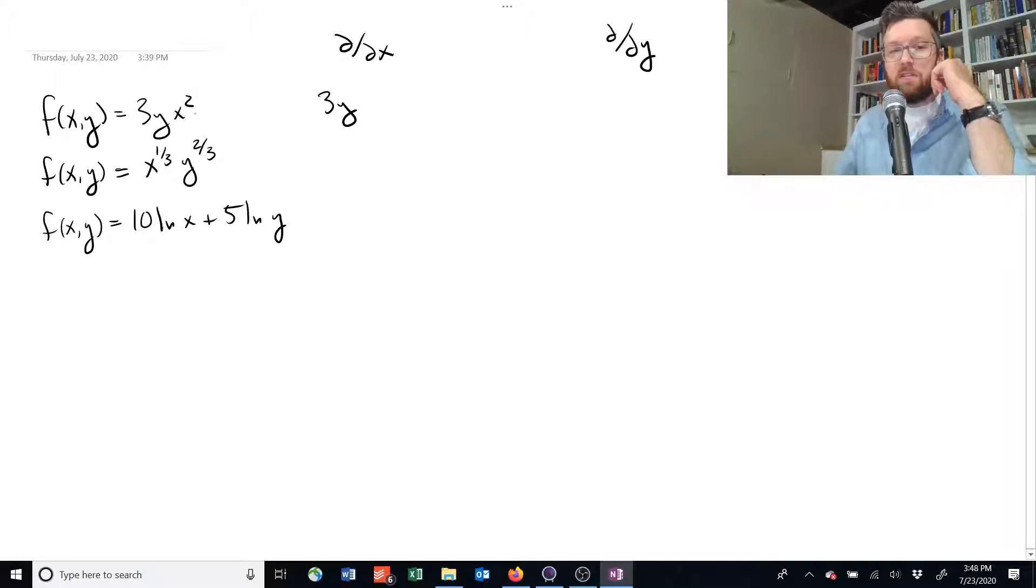Now we focus on this x squared part, and the derivative of that is just two times x. Okay, because if we subtract one from the exponent, we end up with x to the power of one, which we can just write as x.